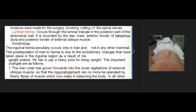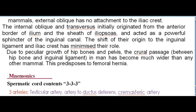Morphology. Inguinal hernia peculiarly occurs only in man and not in any other mammal, due to evolutionary changes in the inguinal region as a result of upright posture. The iliac crest has grown forwards into the lower digitations of the external oblique, so that the inguinal ligament can no longer be operated by fleshy muscle fibers. In all other mammals, the external oblique has no attachment to the iliac crest. The internal oblique and transversus initially originated from the anterior border of ilium and the sheath of iliopsoas, acting as a powerful sphincter of the inguinal canal; the shift of their origin to the inguinal ligament and iliac crest has minimized their role. Due to peculiar growth of the hip bones and pelvis, the crural passage between the hip bone and inguinal ligament in man has become much wider than in any other mammal, predisposing to femoral hernia.